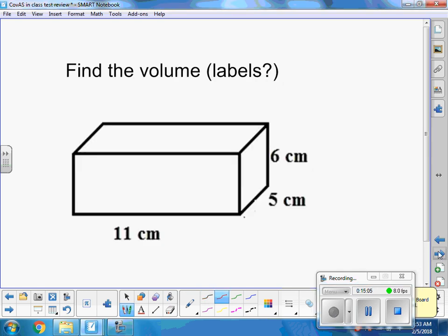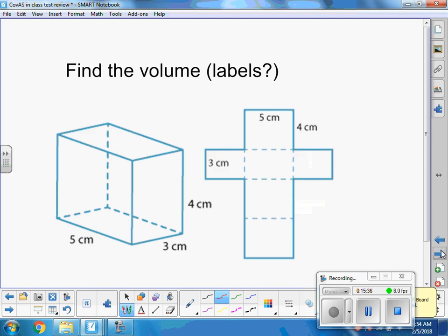Oh, volume. Volume's nice, it's like a breather from surface area. Just do some multiplying. The volume is length times width times height. Let's do the dots instead of x's. 11 times 5 times 6 is 330 centimeters. I'm talking volume, which is 3 dimensions, so I need the 3 on there. Why don't you press pause and find the volume of these shapes. Length times width times height: 5 times 3 times 4 is 60 centimeters cubed because it's volume.